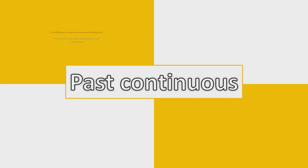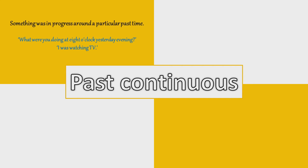Let's get started with the first rule: something was in progress around a particular past time. For example, what were you doing at eight o'clock yesterday evening? I was watching TV. So you have the particular time — eight o'clock in the past, yesterday evening — and during that time you were watching TV.